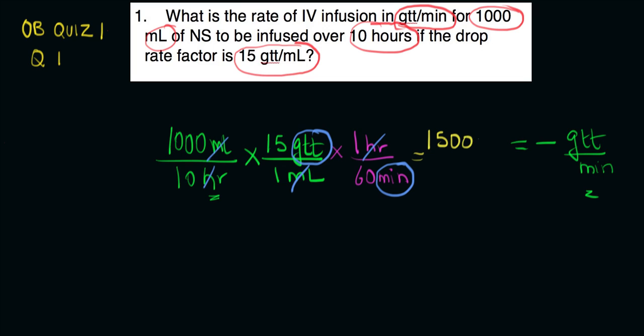You should get 15 with three zeros up here and 600 which should give you a final answer of 25 drops per minute. There is no decimal so there's no rounding but if you did get a decimal all GTT questions should be rounded to the whole number.